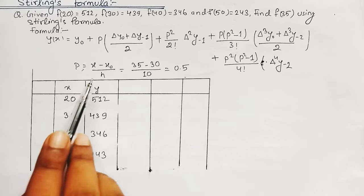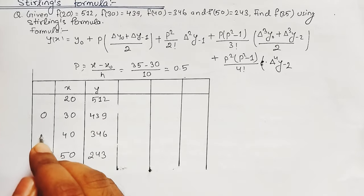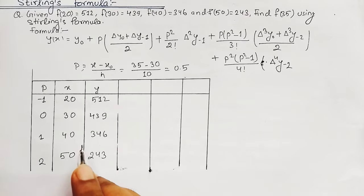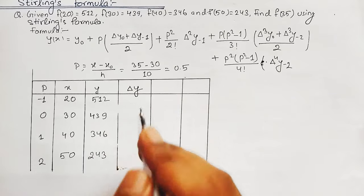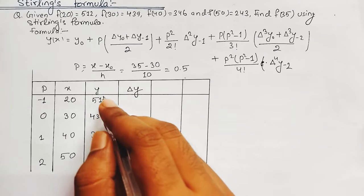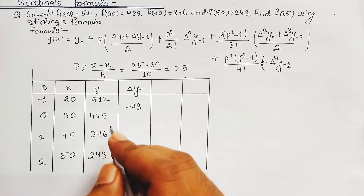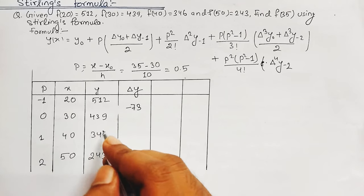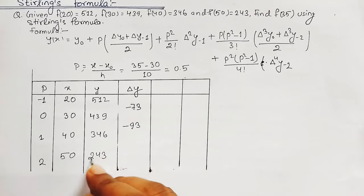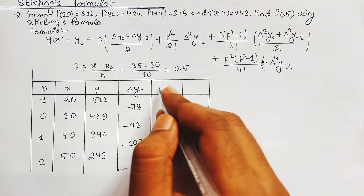Now we calculate the delta y column by subtracting successive y values. Subtracting 512 − 439 gives −73 is Δy₋₁, then 439 − 346 gives −93 is Δy₀, and 346 − 243 gives −103 is Δy₁. We place each difference between the two values used to compute it. Now we need another column of differences from these three values.